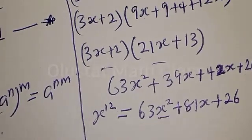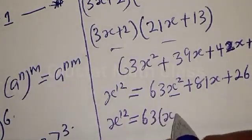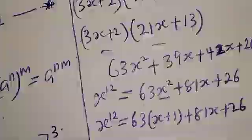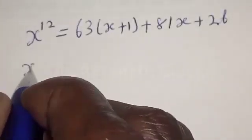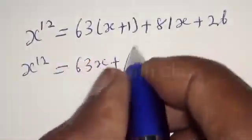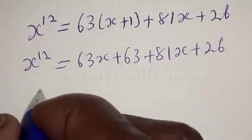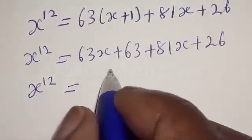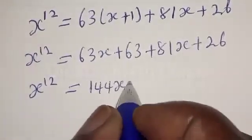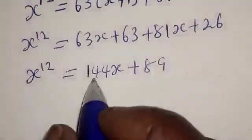Remember, s squared is equal to s plus 1. So substituting: s raised to power 12 equals 63 times (s plus 1) plus 81s plus 26. Opening the bracket: 63s plus 63 plus 81s plus 26. Combining like terms: 63s plus 81s is 144s, and 63 plus 26 is 89. So we have 144s plus 89.